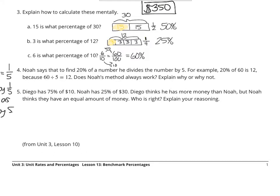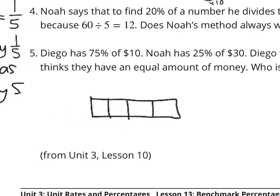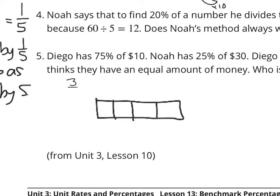Diego has 75% of $10. Noah has 25% of $30. Diego thinks he has more money than Noah, but Noah thinks they have equal amount of money. Who is right? Explain your reasoning. Well, let's just kind of figure this out. Diego has 75% of $10. And one thing we could do is to break this down into a tape diagram. And 75% as a fraction is 3/4. And so, if we take our $10 and break it into four equal pieces, that's going to be $2.50 here, $2.50 there, $2.50 in that box, and $2.50 here.